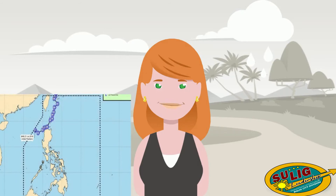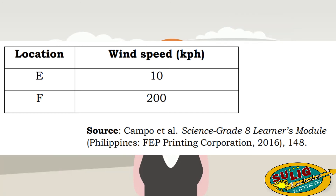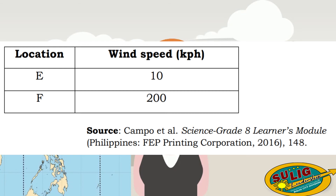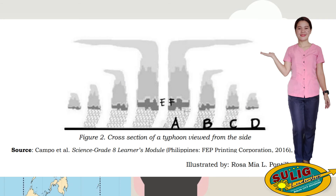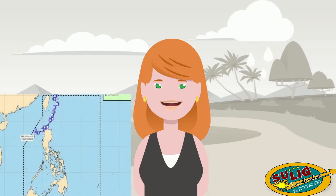Locations E and F have different wind speeds. Location E, within the eye of the typhoon, has the least wind speed at 10 km per hour. But Location F is within the clouds surrounding the eye — making up the eyewall — and has the greatest wind speed at 200 km per hour. Typhoons have lower air pressure in the middle, or eye, but within the eyewall, where thick clouds are found, the wind speed is greatest. When the eye of the typhoon passes over a specific place, it is the winds at the eyewall that bring the most destruction.